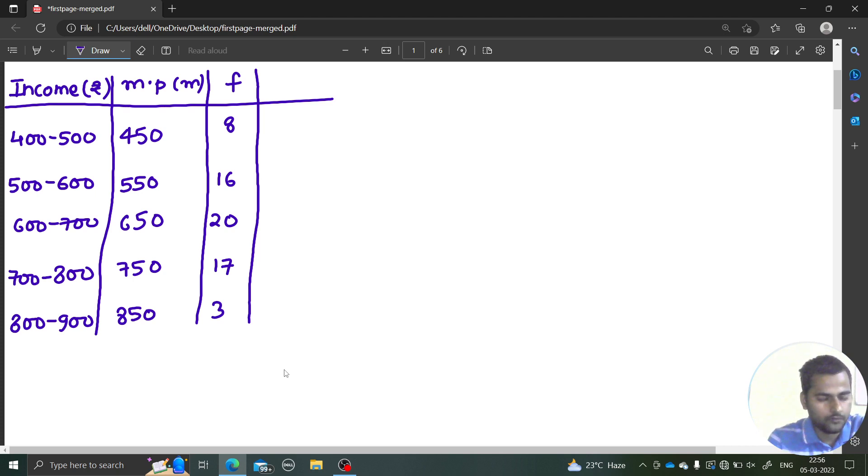We'll assume a value from 450 to 850. There are five values; you can assume any value from it. I'm assuming the mid value, which is always a better choice. So I'm assuming 650. From every value in M, we'll subtract 650 from it and divide by the width of the class which is 100. Do it for every M and let's call this value D.